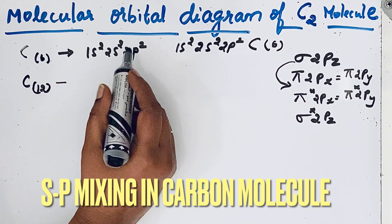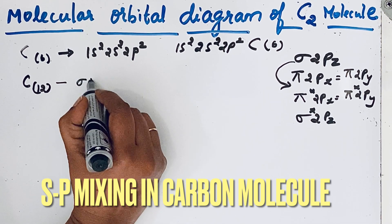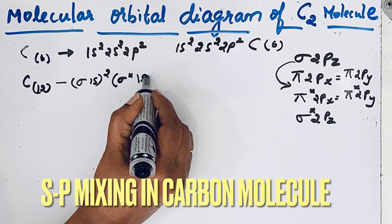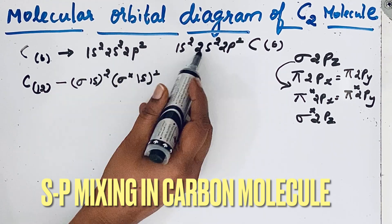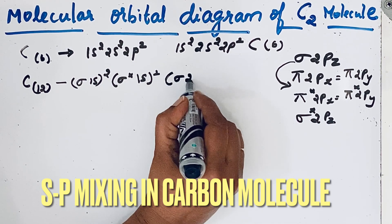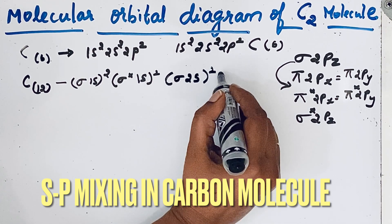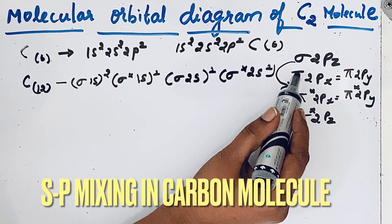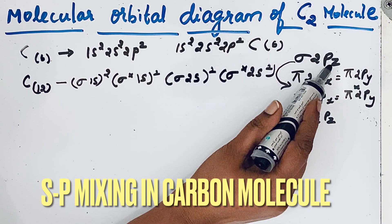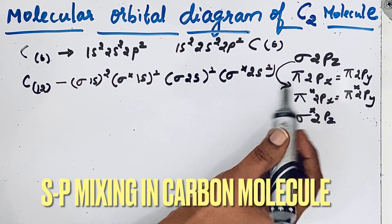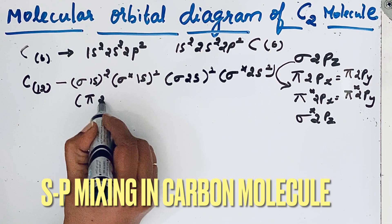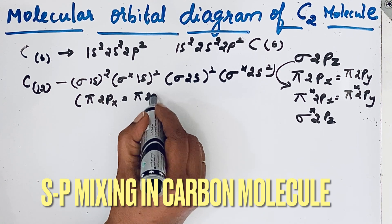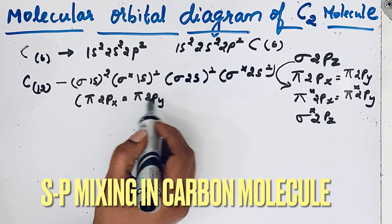The molecular orbital configuration is: sigma 1s², sigma* 1s², then sigma 2s², sigma* 2s². Now, instead of writing sigma 2pz next, due to sp mixing we write pi 2px and pi 2py first. Pi 2px equals pi 2py because both have the same energy.